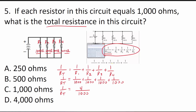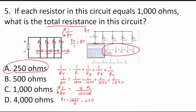We want R_T, not 1/R_T, so we flip both sides: R_T = 1000/4. 1000 divided by 4 equals 250. So the total resistance in this parallel circuit is A, 250 ohms, calculated using the parallel resistance formula.